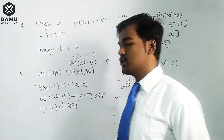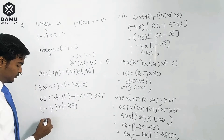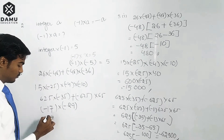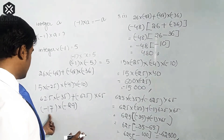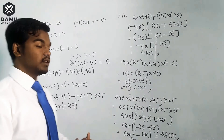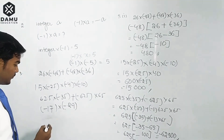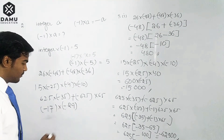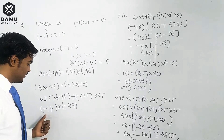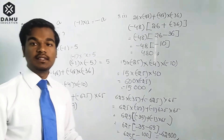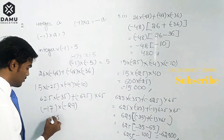Next: (−17)×(−29). We can write 29 in a useful format to simplify the multiplication. We split it as 30 minus 1, giving us minus 17 into (minus 30 plus 1).